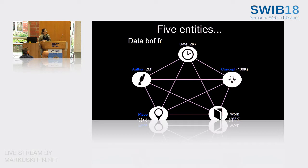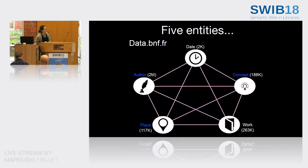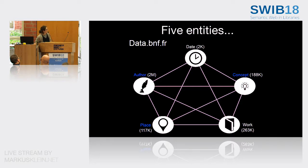I'm going to describe the project and the process of FRBRization at the BNF, the National Library of France. This project relies on named entities. The principle is to dedicate each entity a web page on which we aggregate content from several applications of the library. We have entities such as date concepts, places, authors, and finally works. Today I'll specifically talk about works, because we've been trying to create work entities automatically with algorithms when they wouldn't otherwise exist for bibliographic records.